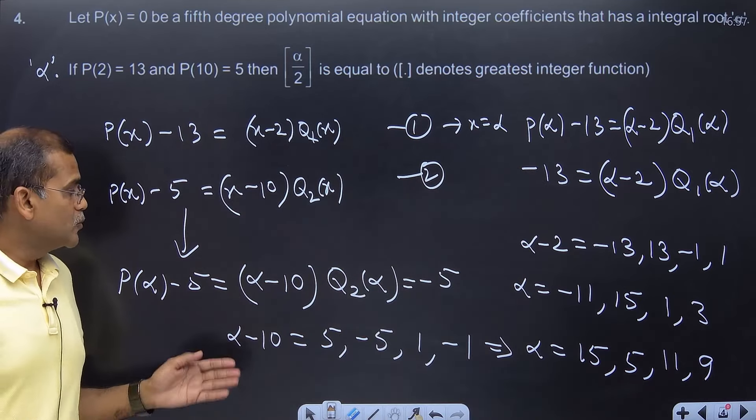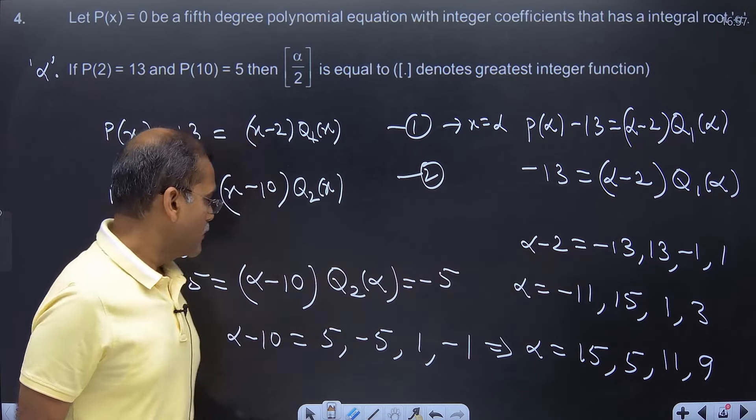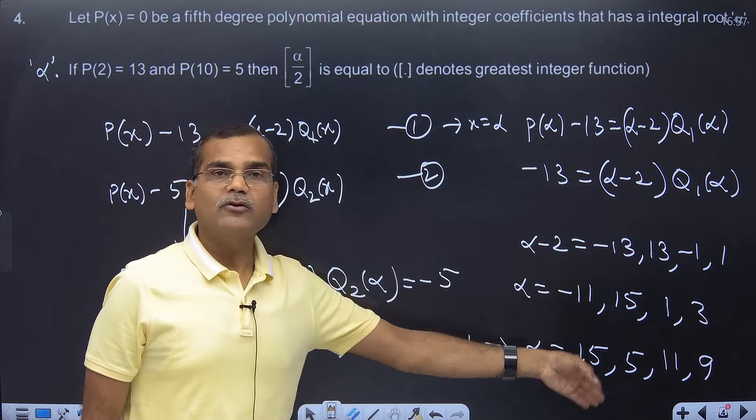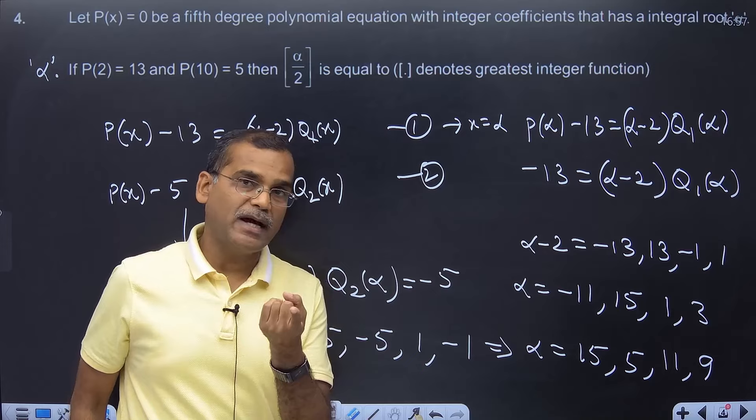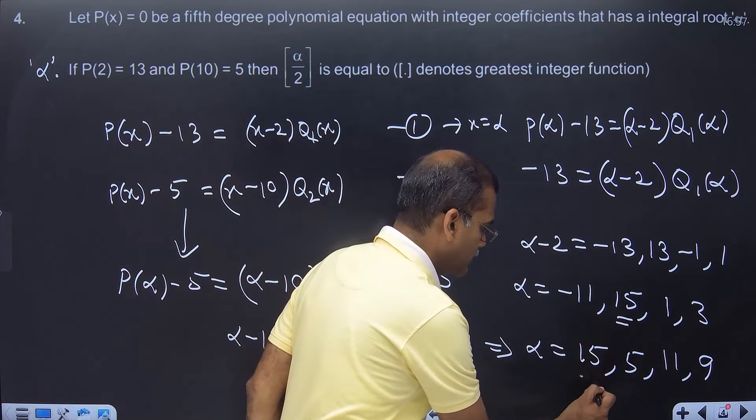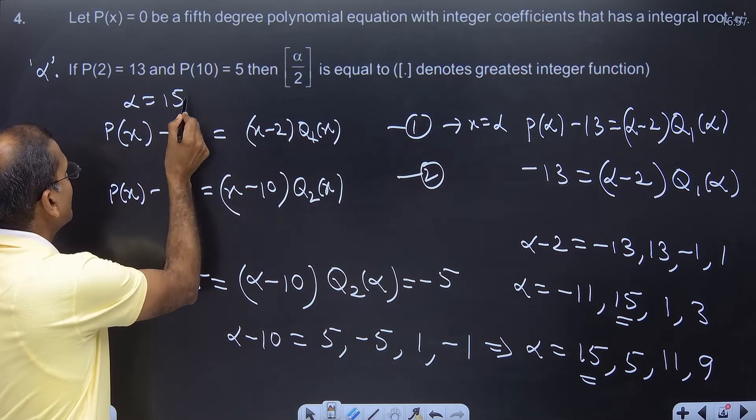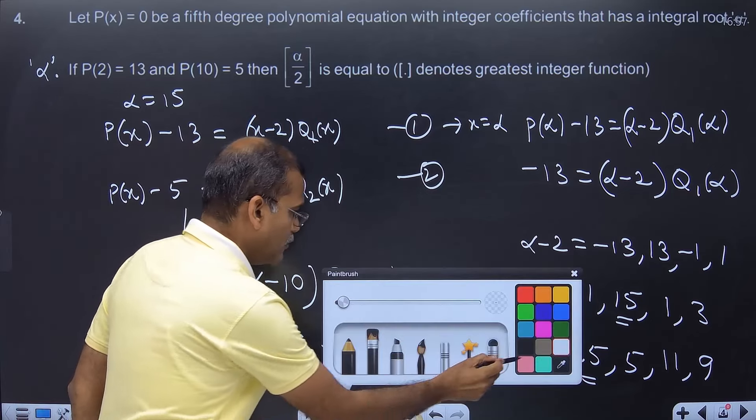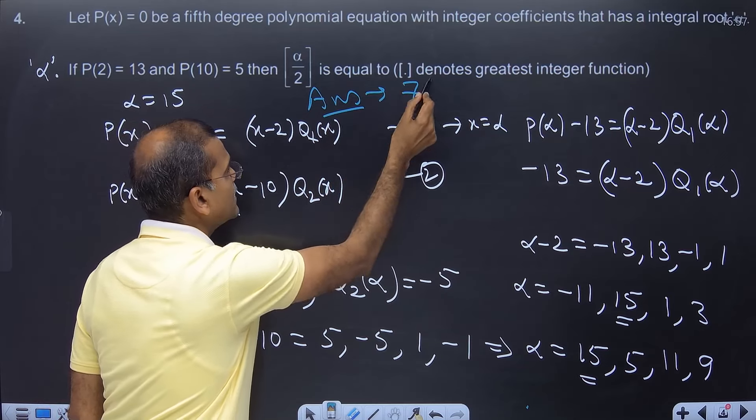You agree that I have to make both conditions true. I had to satisfy this one, and I had to satisfy that one as well. This means that out of the possible values of alpha, the value common to both sets is my answer. So you can easily see which is the common answer. Alpha finally comes to 15. Now you are asked for the greatest integer of alpha by 2, so let me write the final answer. The answer is 7.